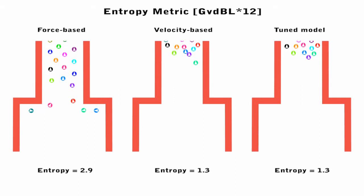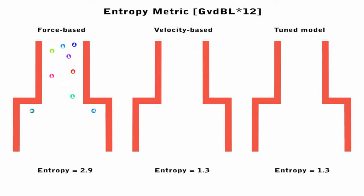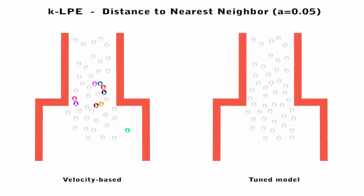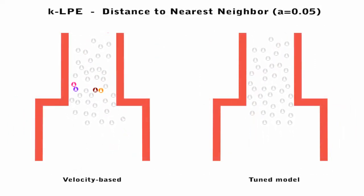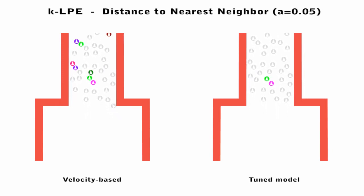The velocity-based model and the data-tuned model both perform well visually and have good entropy metric scores. However, applying our framework reveals that some agents in the velocity-based simulation have anomalously low distance to their nearest neighbors as compared to the real-world data.